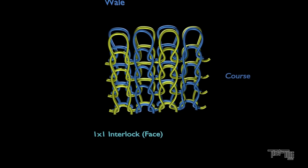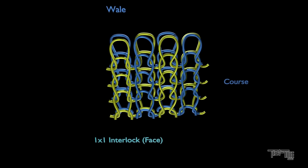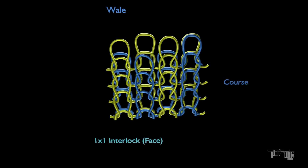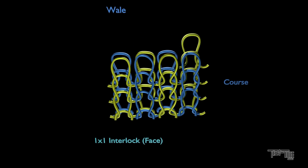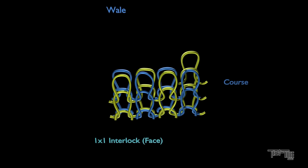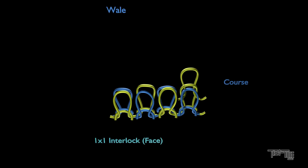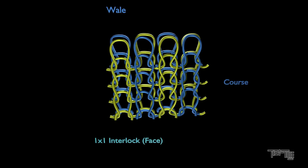No distinguished rib line is visible in interlock fabric. Unraveling can be done only from the yarn knit at last. Interlock is used in joggers, pants, pajamas, and many fancy dresses.